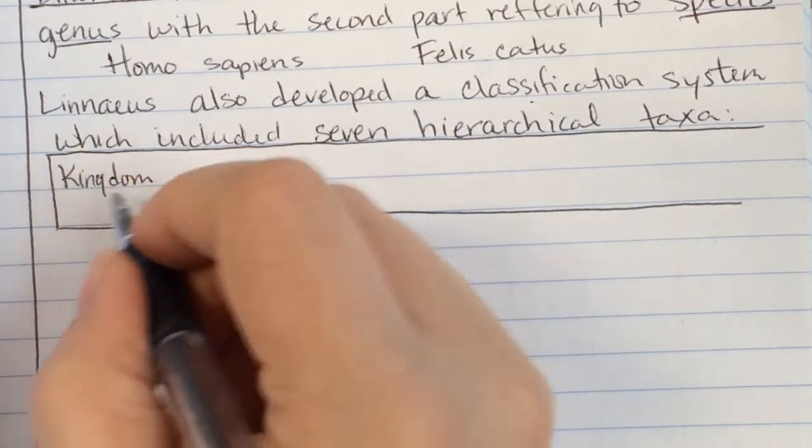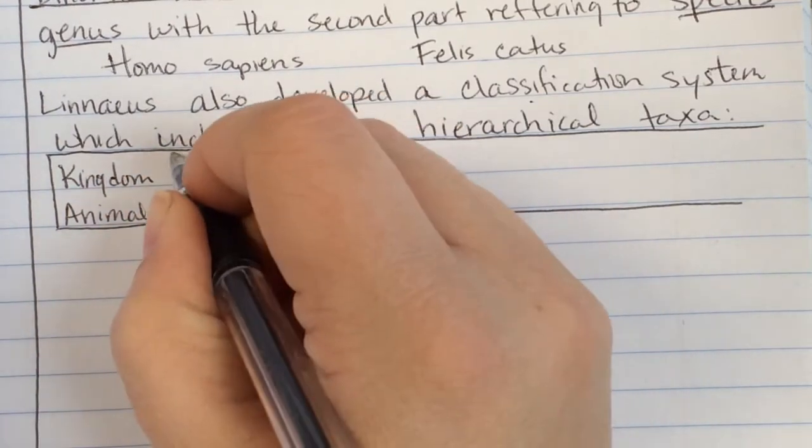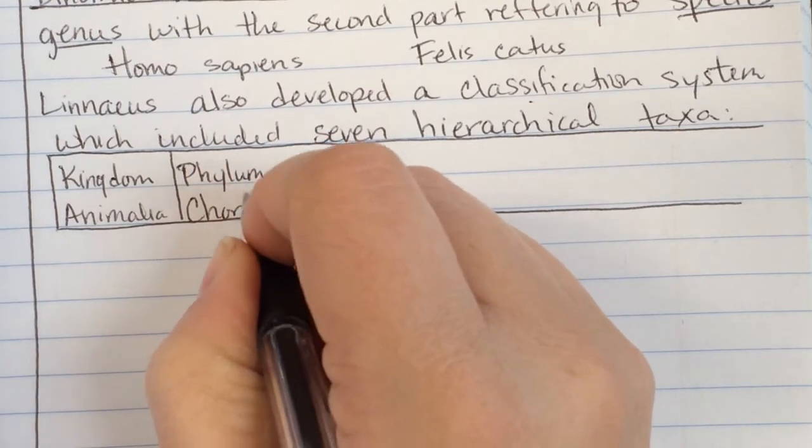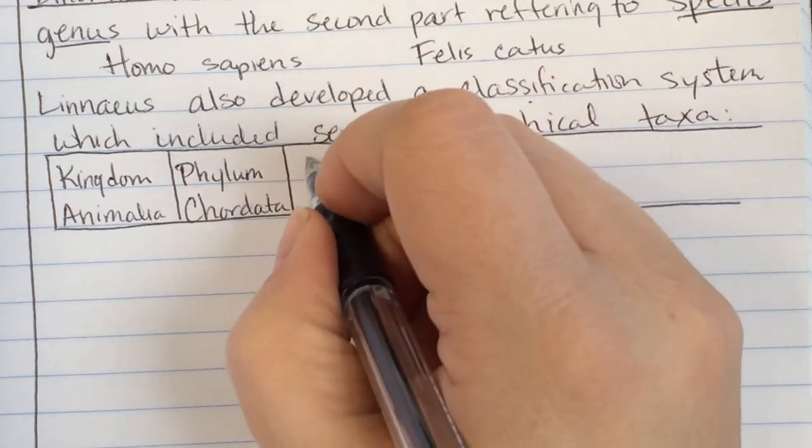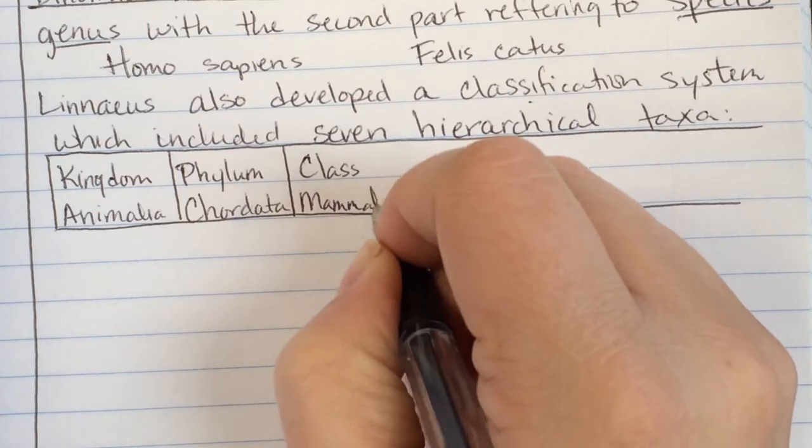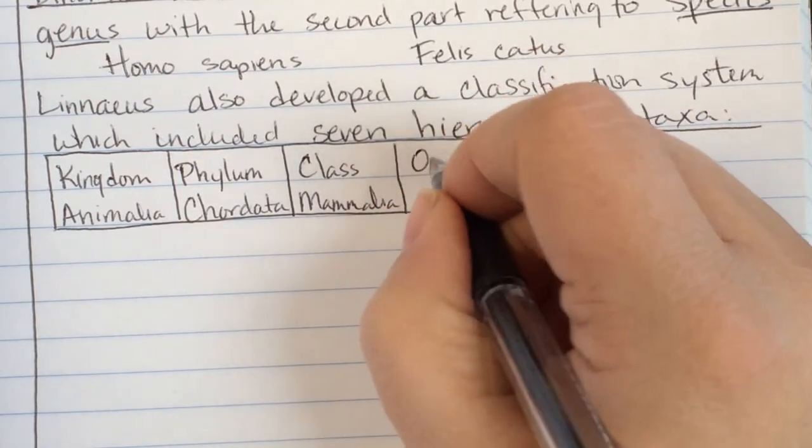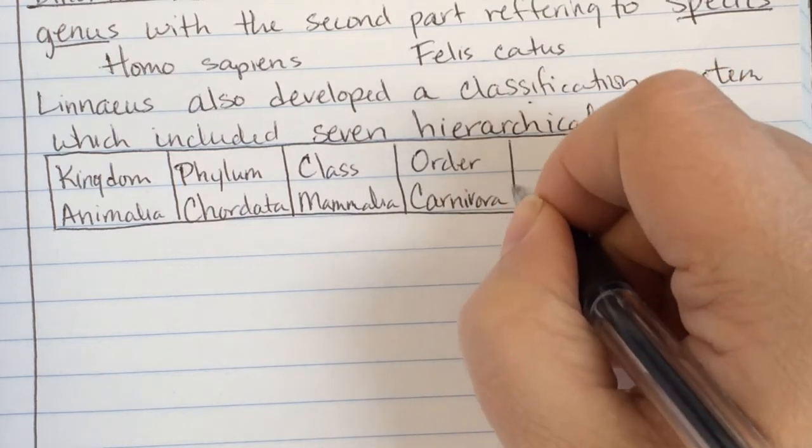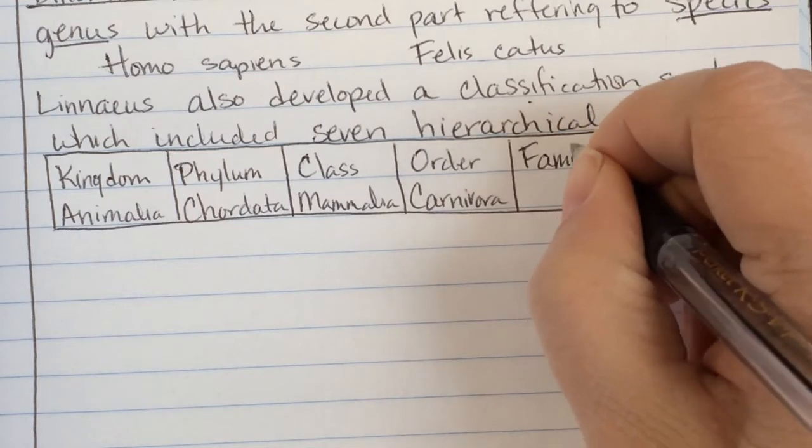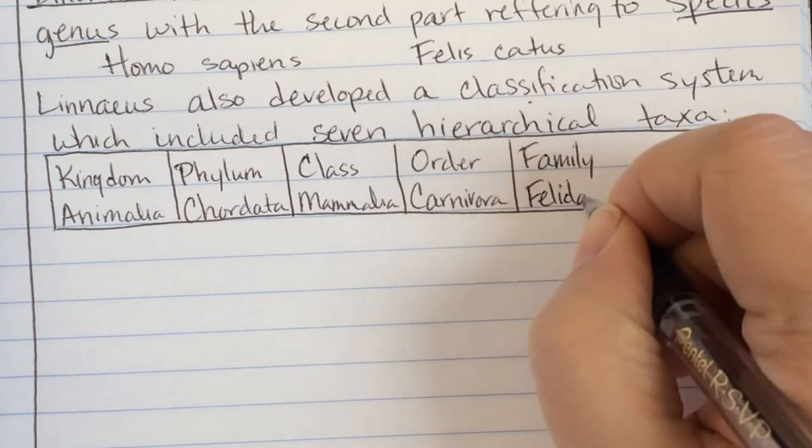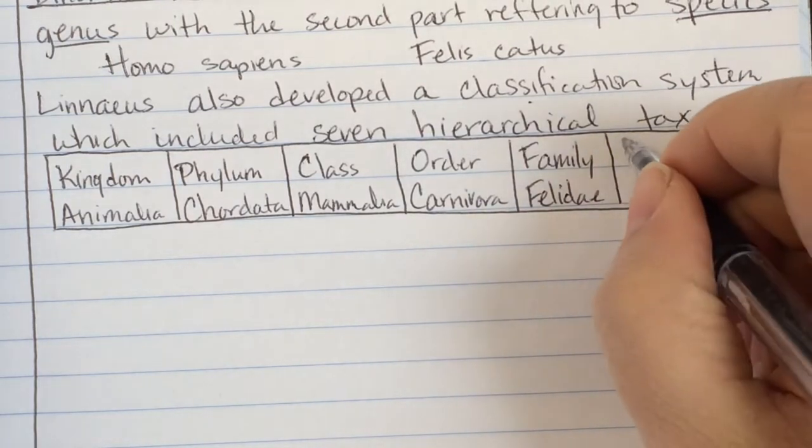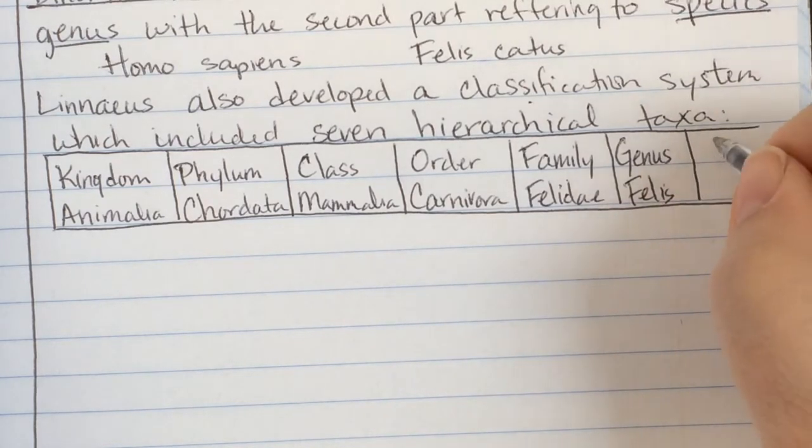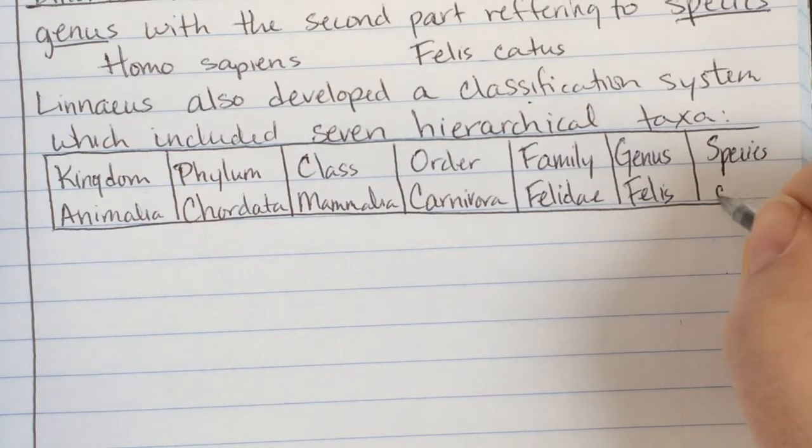Your biggest, largest circle is kingdom. And so, let's go ahead and work the cat, our Felis catus. They are in the kingdom Animalia. They are in the phylum Chordata. Class Mammalia. Order Carnivora. Family Felidae. Genus Felis, and Species Catus.